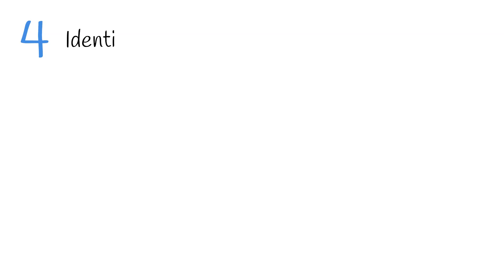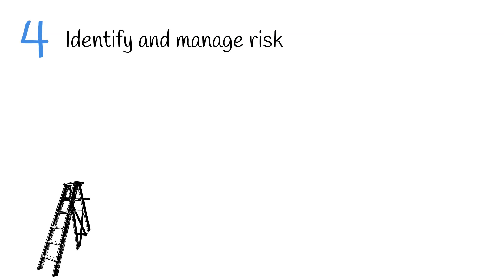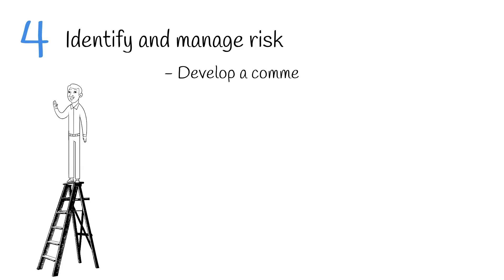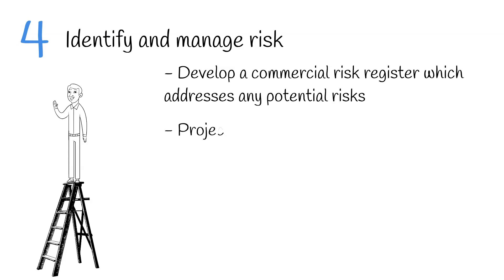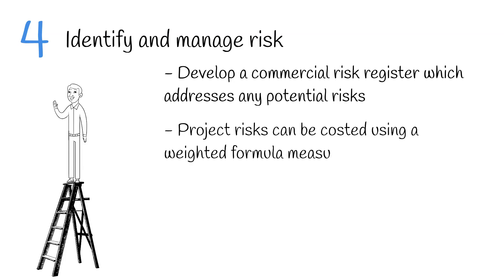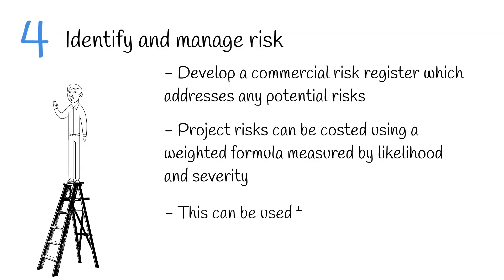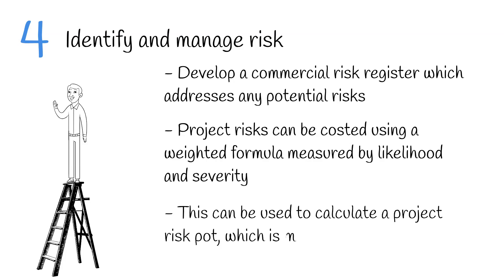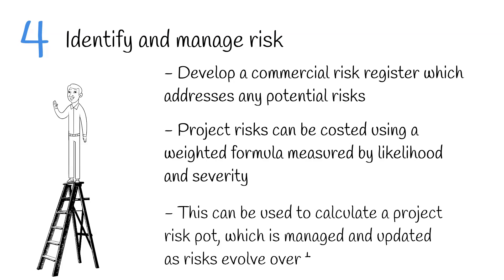The fourth tip is to identify and manage risk. Risk can impact the project budget and it's important to identify and manage them proactively. You'll need to develop a commercial risk register which addresses any potential risks. Project risks can be costed using a weighted formula measured by likelihood and severity. This can then be used to calculate a project risk pot which can be managed and updated as risks evolve over the project life cycle.